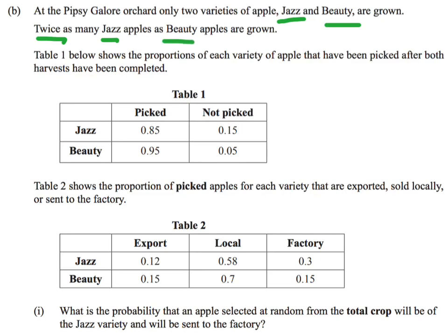That's talking about the trees themselves. If I'm going to compare the jazz apples to the beauty apples, for every two jazz apples that they grow, they're going to get one beauty apple. We can think of that in terms of - if there are three apples, that means two of the three apples would be jazz and one of the three apples would be beauty.